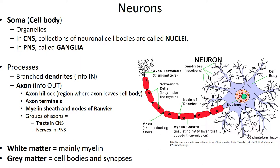Parts of a typical neuron include the cell body, also called the soma, which is the enlarged metabolic region of the cell where the nucleus is located. Neurons possess large amounts of rough endoplasmic reticulum clustered within the cell body to form Nissl bodies. Clusters of cell bodies in the central nervous system are called nuclei, while clusters in the peripheral nervous system are called ganglia. Cellular processes are called tracts in the CNS or nerves in the PNS.